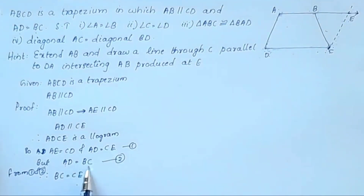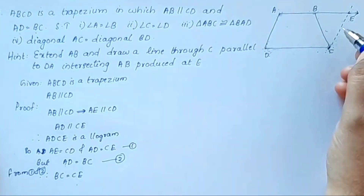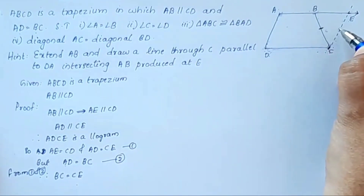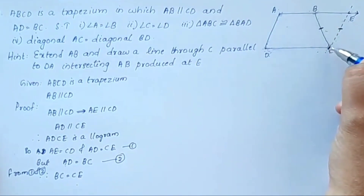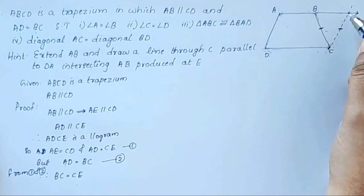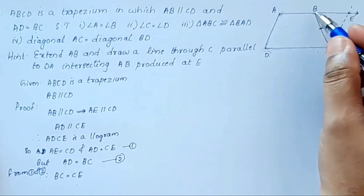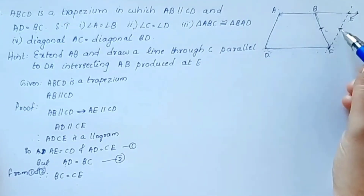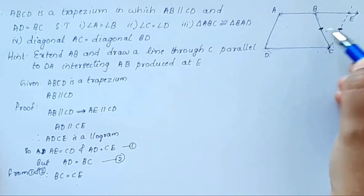Now BC and CE: since AD is equal to BC, and AD is equal to CE, we get BC equal to CE. This means triangle BCE is an isosceles triangle, with two equal sides BC and CE.